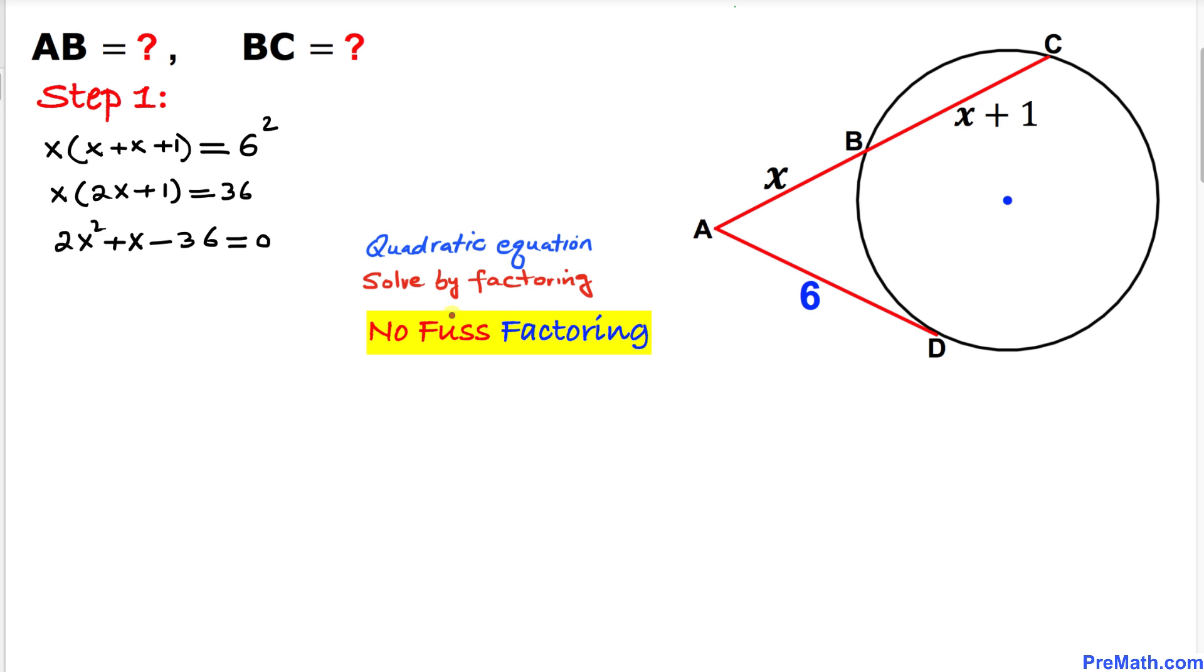Let me show you how we use no fuss factoring. Focus on 2x, forget about the exponent. We write two parentheses: 2x and 2x equals 0. Now let's multiply these two end numbers.